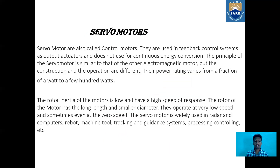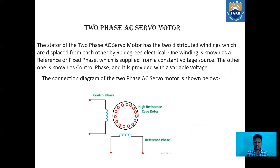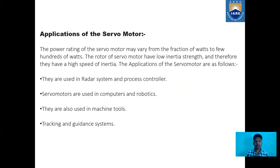From the previous slides we came to know about what servomotors are and what their classifications are — two-phase AC servomotor and three-phase servomotor. The main topic was the two-phase AC servomotor, including its diagram with control phase, reference phase, and high resistance cage rotor, as well as the torque-speed graph and its applications. With this I will end my session. Thank you.